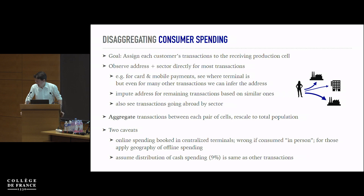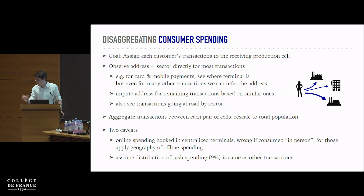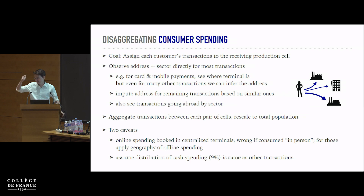For other transactions like bill payments, it turns out that even in the raw data the bank has, we can also see an address. Where we can see the location but not the sector, we use geocoded transactions by similar people — members of the same household cell in similar sectors. We also see transactions going abroad by sector, so we can see exactly how much a Danish resident is spending, say, in Paris.